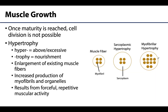Once a muscle cell is fully fused and considered mature, cell division is not possible. So in order for a muscle cell to get larger — and we know muscles are capable of this, think of a bodybuilder, or even just regular muscle growth through the juvenile period — the muscle cell has to hypertrophy, which is the enlargement of existing muscle fibers.